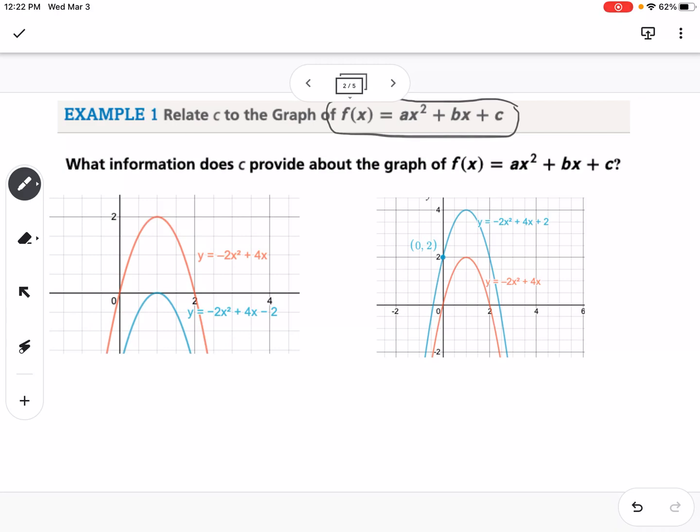This first example is investigating what is the c in ax² + bx + c going to tell us. You can see here, there's a couple different pictures. This first one right here, we notice that c is equal to 0, and we can see that our graph hits the y-axis at 0. Whereas this right here has a c value of negative 2, and it would hit our y-axis at negative 2. This one has a c value of positive 2, and you can see that it hits the y-axis at 2. So c tells us our y-intercept.